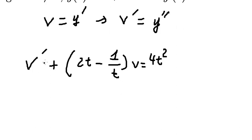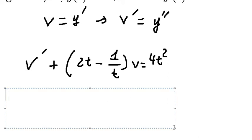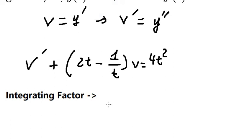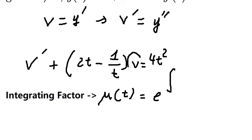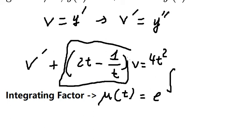So we have v and first derivative of v. We can use an integrating factor, so we need to find mu of t. It equals e to the power of the integral of 2t minus 1 over t, next to v. This is the integrating factor.